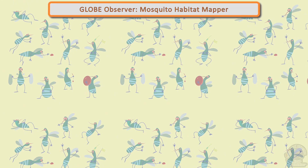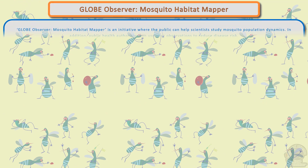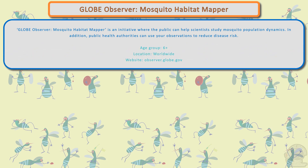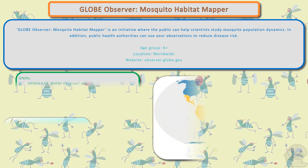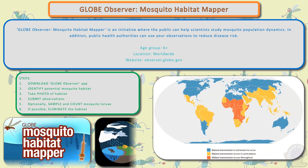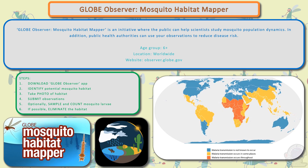Globe Observer Mosquito Habitat Mapper is an initiative where the public can help scientists study mosquito population dynamics. In addition, public health authorities can also use your observations to reduce the risk of mosquito-borne diseases. Download the Globe Observer app to take part. Identify potential mosquito habitats by looking for bodies of stagnant water, take photos of the habitat, and submit them in the app.